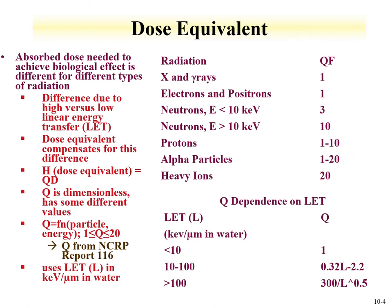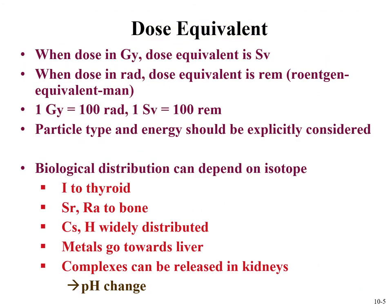For the work we'll focus on, we use 1 for photons, 1 for electrons, and 20 for alpha particles to convert from dose to dose equivalent. When dose is in gray, the dose equivalent is in sievert. When dose is in rad, the dose equivalent is in rem. Again, 1 gray is 100 rad, so 1 sievert is 100 rem.